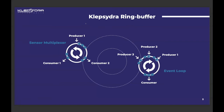Then we have the other approach, which is more or less the opposite: the event loop. In this case we have multiple producers of data, producing at different rates, completely independent of each other. The ring buffer streamlines all this data into a single-threaded consumer. The main advantages of these two approaches are that the ring buffer is very low power consuming and doesn't require a lot of CPU, and the second advantage is the large throughput they can achieve.